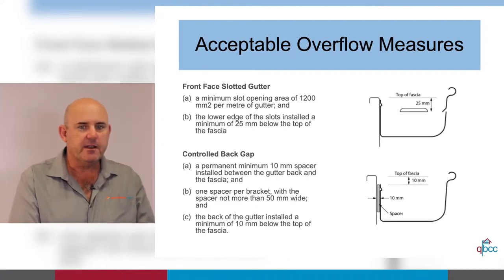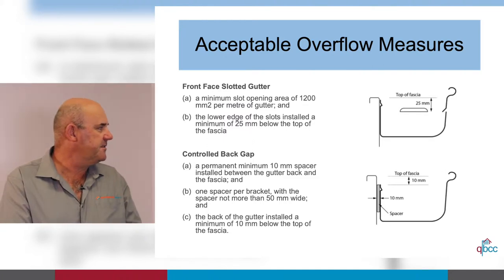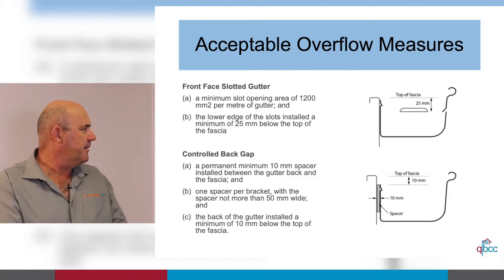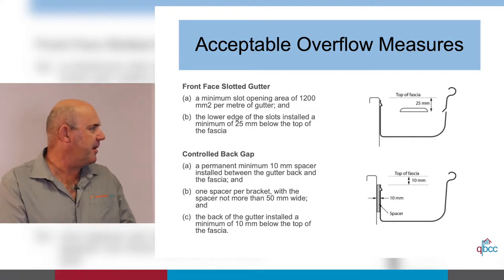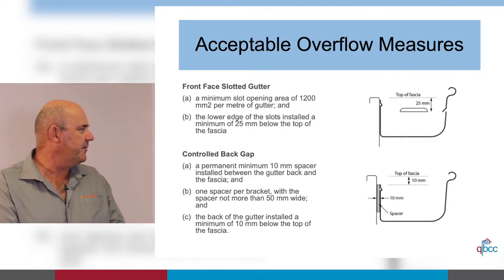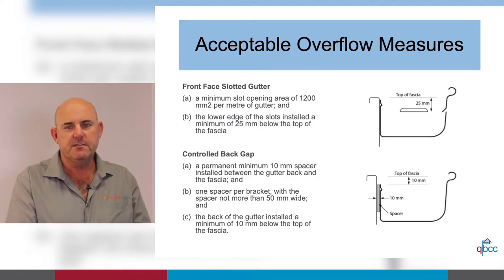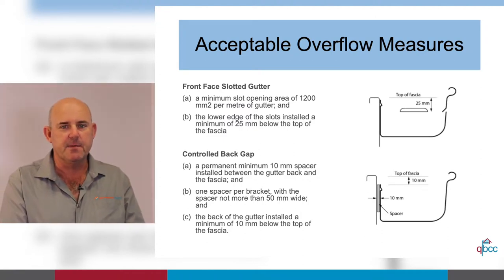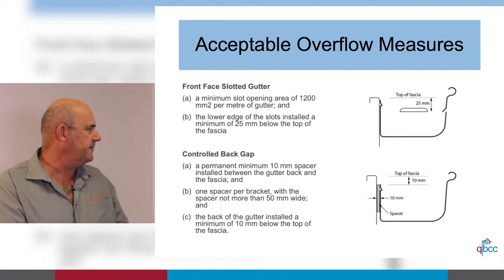This is straight out of the construction code — the acceptable overflow measures. We've got a front base slot of gutter: a minimum slot area of 1200mm² per meter of gutter. These will be punched into the gutter by the roll former as the gutter is made, so you shouldn't have to be doing the maths on that.